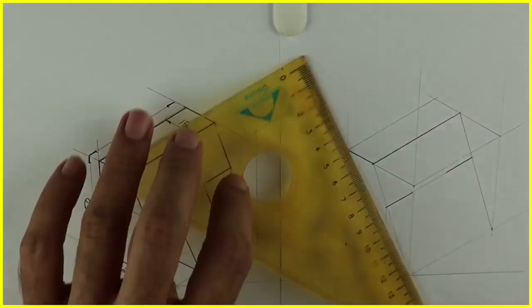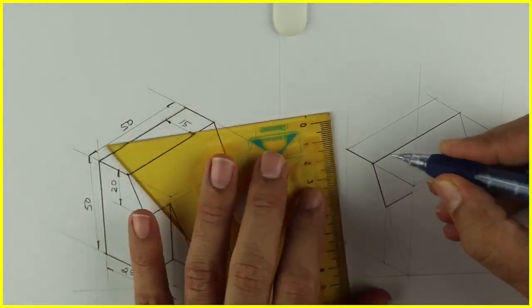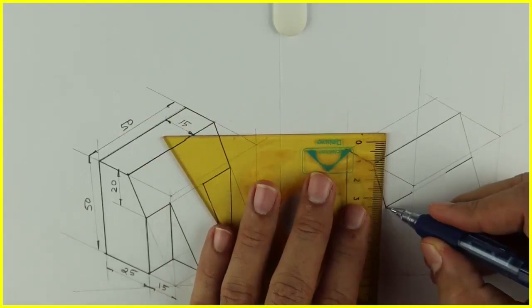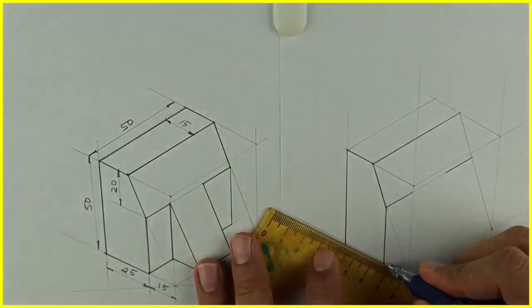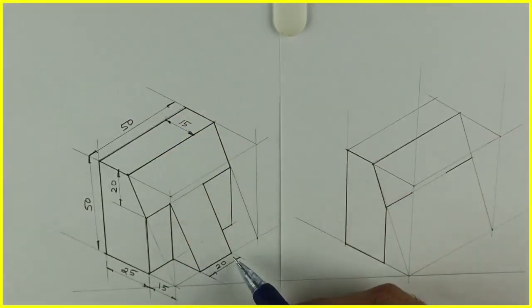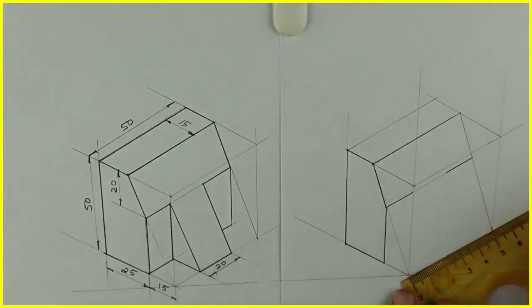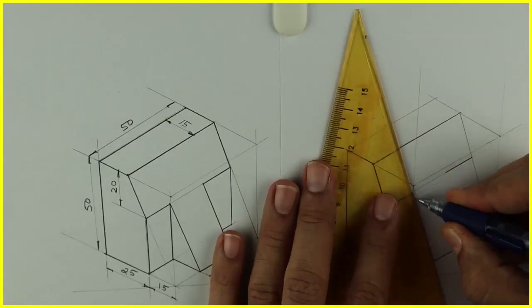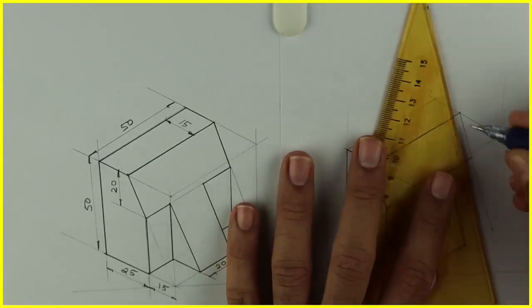15 here and we'll join this front part. Now other part is behind by 15, see this is 20. So it is how much? 15, 15. So again I will mark 15, 15 and I will join that T shape.